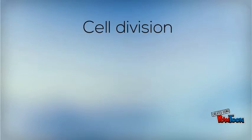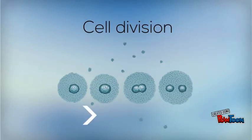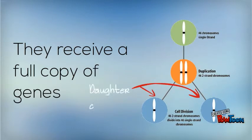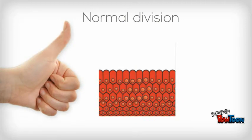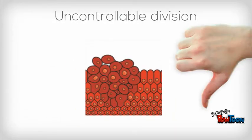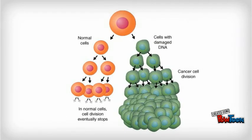Cell division is when one cell divides to produce two new cells. The daughter cells produced are identical to the parent cell as they receive a full copy of the genes. Healthy cell division looks like this, whereas abnormal cell division looks like this. Comparing the two, normal cell division stops once two new daughter cells have been produced.